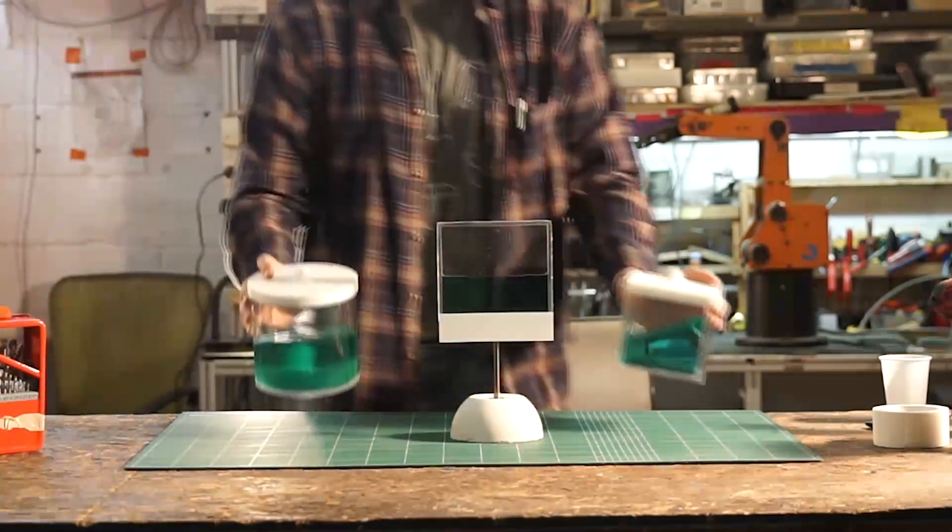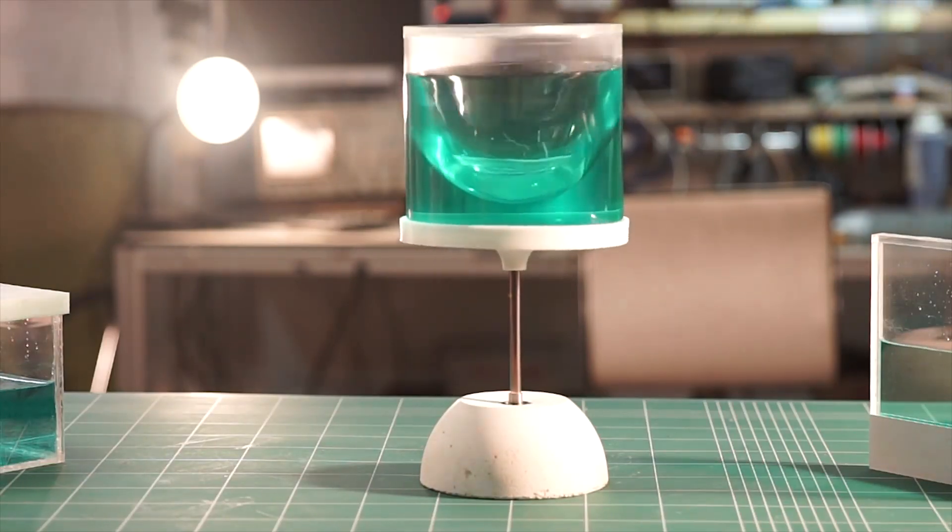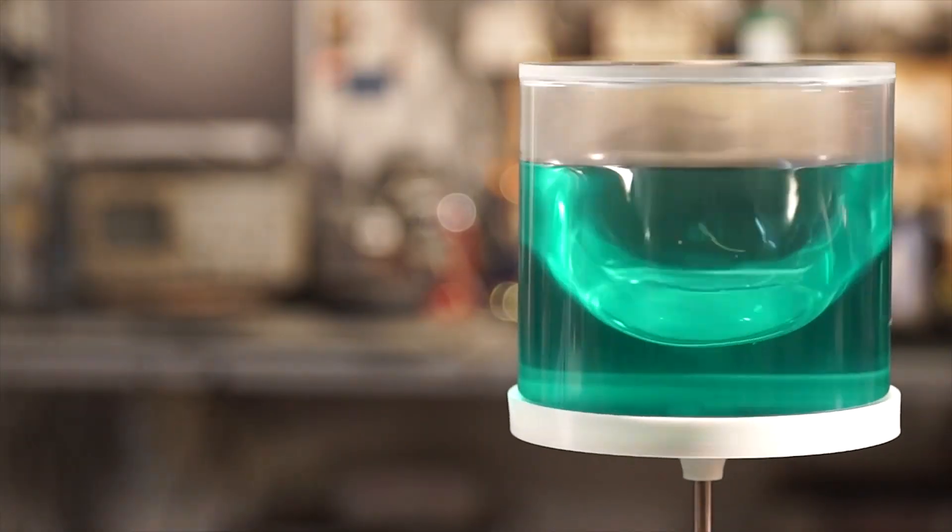I made two more water tanks to spin. The first is a cylindrical vessel that very clearly shows the full 3D paraboloid created on the surface of the water.